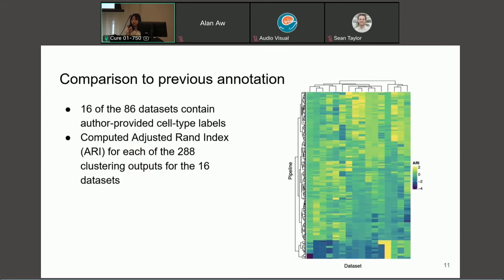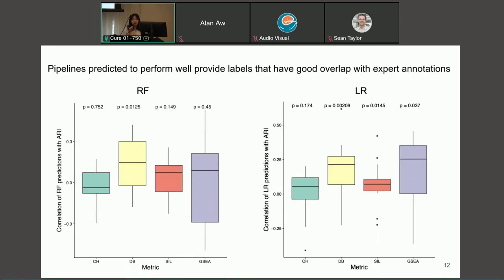Next, we also assessed the performance of our models by comparing to previous cell type annotations. So 16 of the 86 datasets that we looked at actually came with author-provided cell type labels. And we ensured that we included these 16 datasets in the test set so that we could compare our test time predictions to the adjusted RAND index, which we computed for each of the 16 datasets with the cell type labels. And once again we have box plots here with the metric on the x-axis and the correlation between our model's predictions and the adjusted RAND index on the y-axis. So for these we can see that at least three of the four metrics for the linear regression models actually correlated significantly above zero with the ARI, which shows that the pipelines that our models predict to perform well actually provide cell type labels that have good overlap with expert annotations.